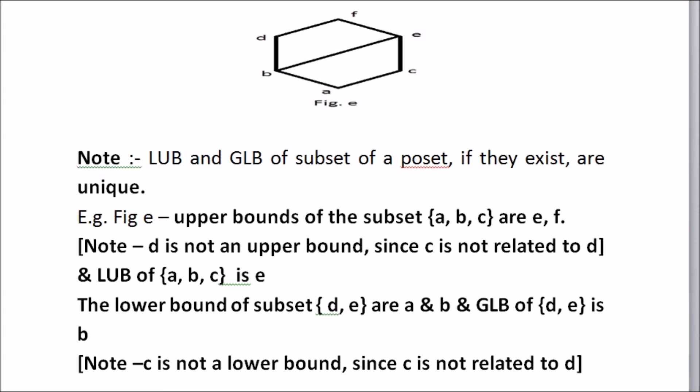Taking the set A, B, and C — the upper bound is E and F, because from here we move in the upward direction. D is not an upper bound because C is not related to D; there is no line going to C and D. As we see here, B and E are joined, meaning there is a line going to B and E. Now we look at the lower bound of D and E.